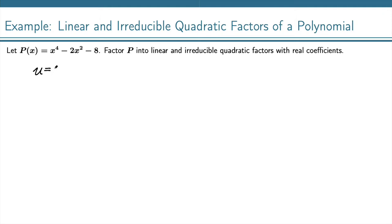So if we let u equal x squared, then we can rewrite this as a function of u as u squared minus 2u minus 8. And that just helps us to see it as a quadratic and then be able to factor it.